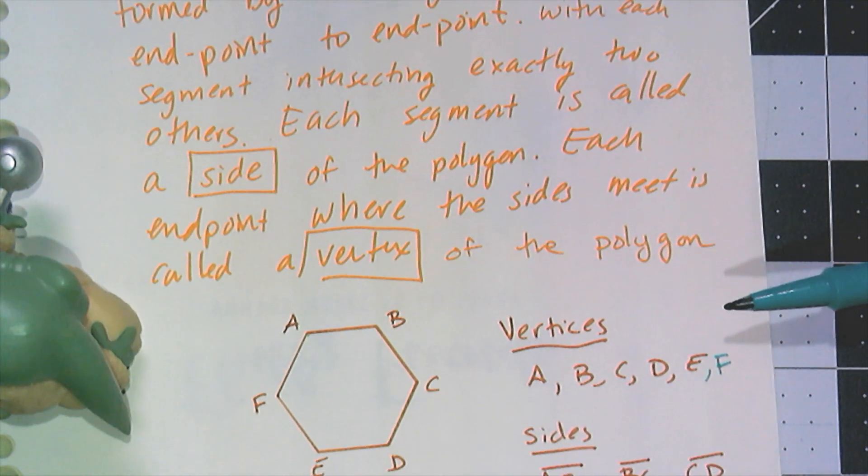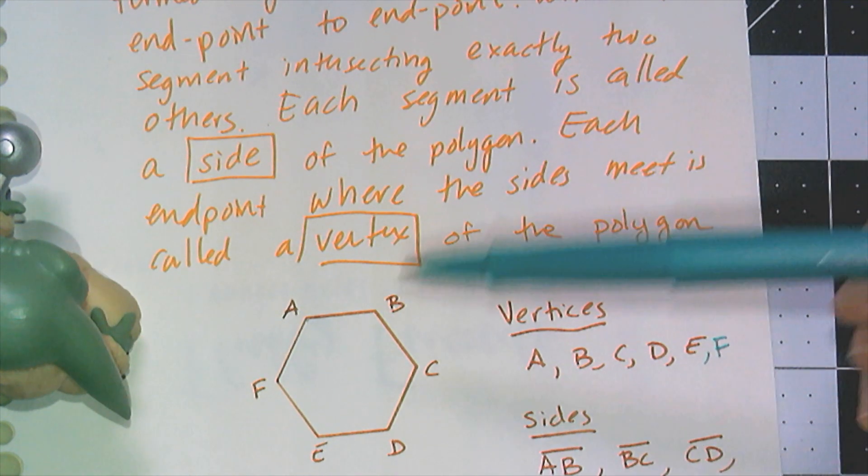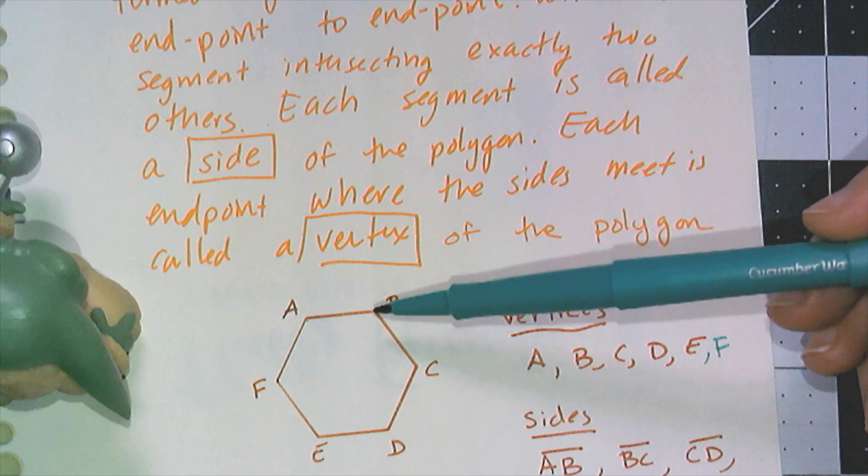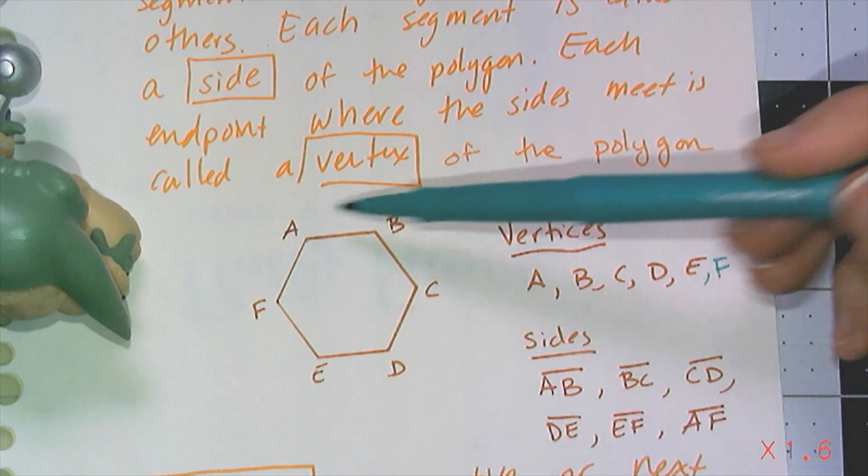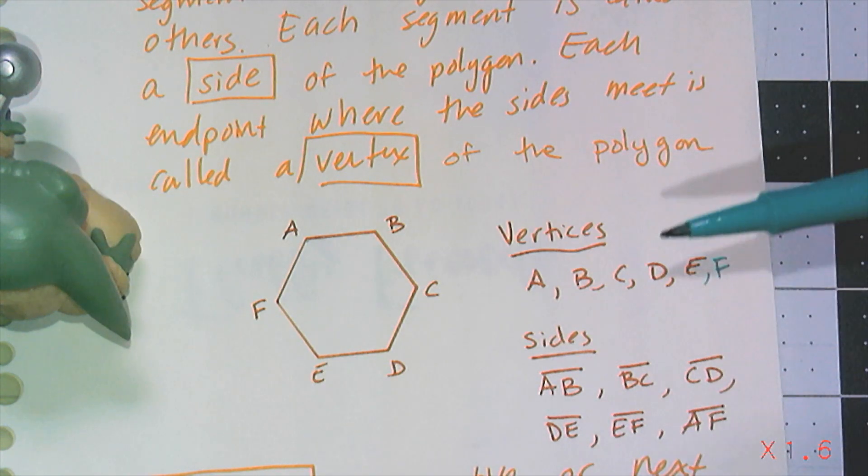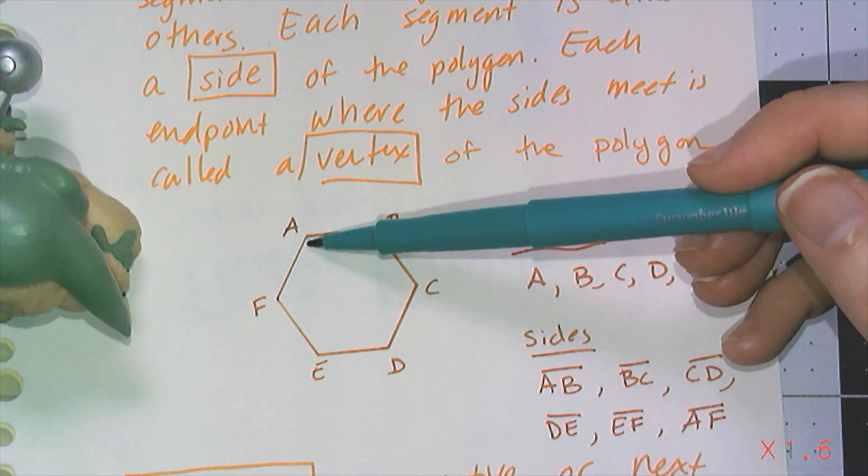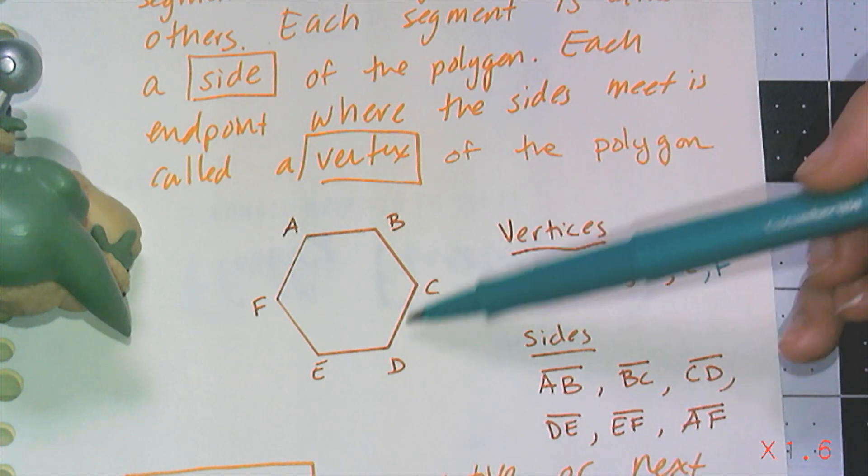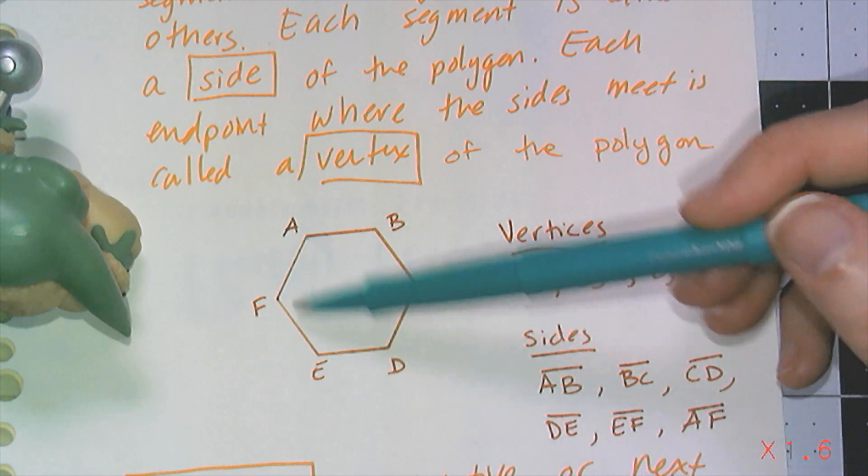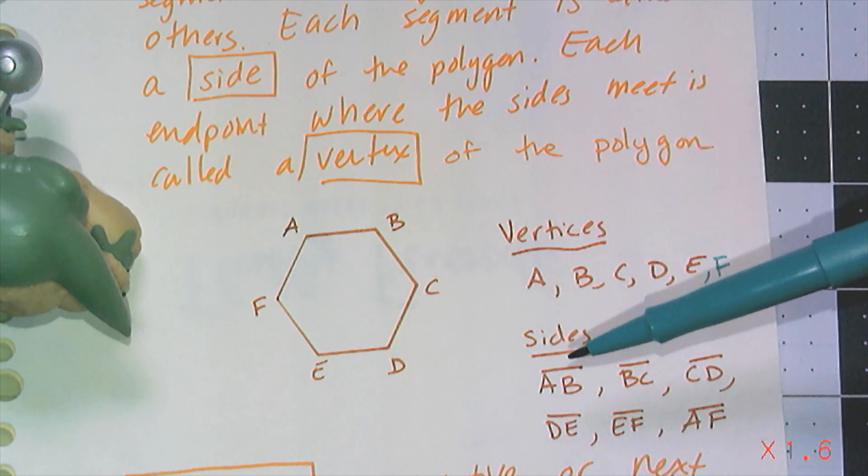The plural of vertex is vertices, and this polygon I've drawn has six vertices A, B, C, D, E, and F. It also has six sides: segment AB, BC, CD, DE, EF, and AF. Those are the sides of the polygon.